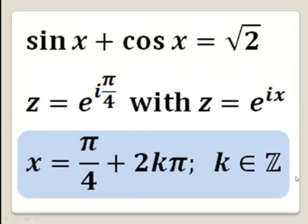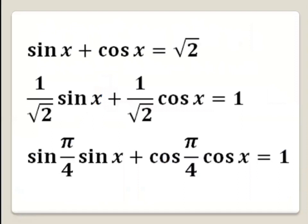Now for the second method, using trigonometric identities, we have sine x plus cosine x equals square root of 2. We divide the whole equation by square root of 2 to get (1 over square root of 2)·sine x plus (1 over square root of 2)·cosine x equals 1. Note that 1 over square root of 2 equals sine of π over 4, and also equals cosine of π over 4.